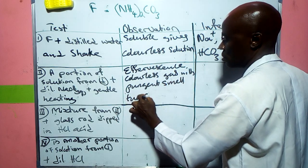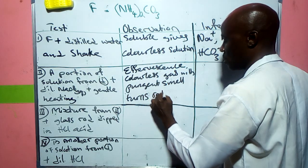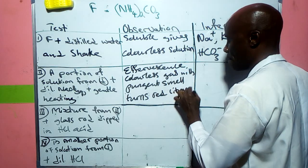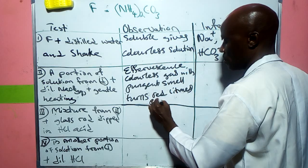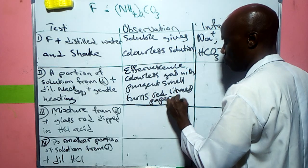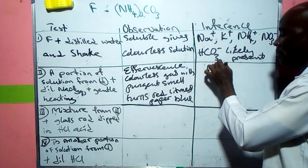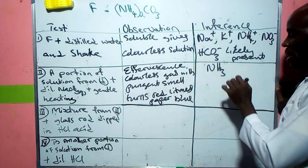This gas turns red litmus paper blue. What we're expecting there will then be ammonia, ammonia gas. And then it means that ammonium ion is likely present.